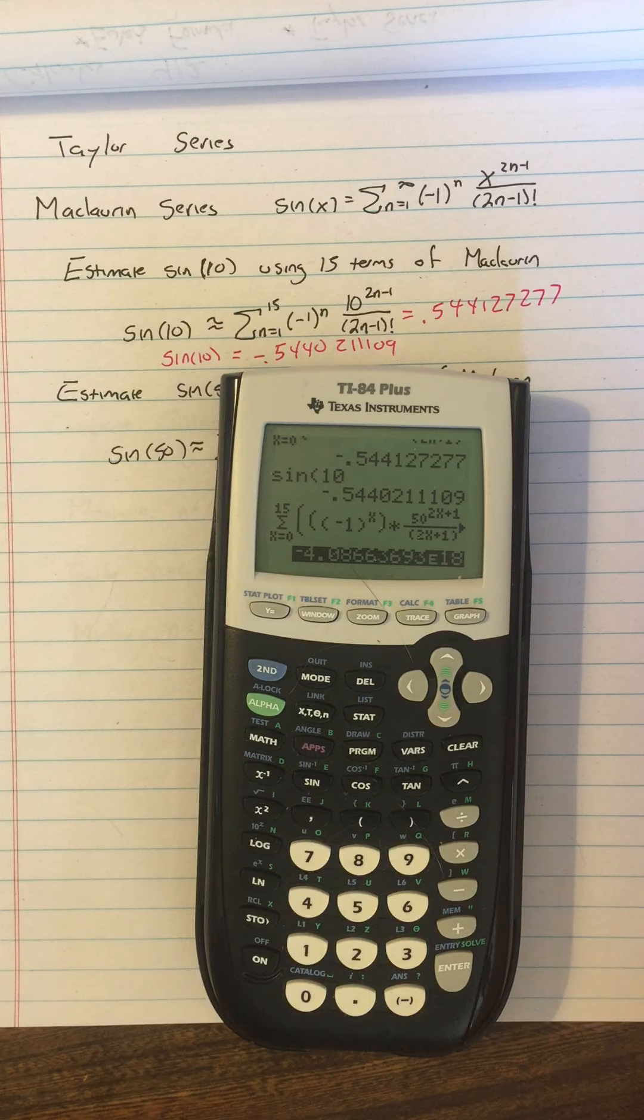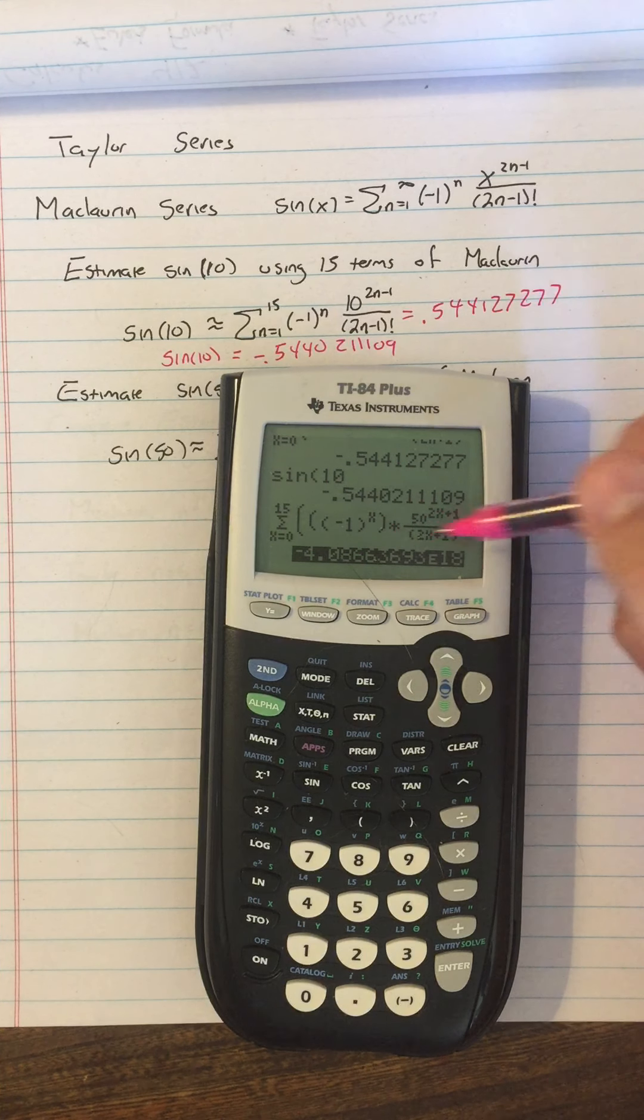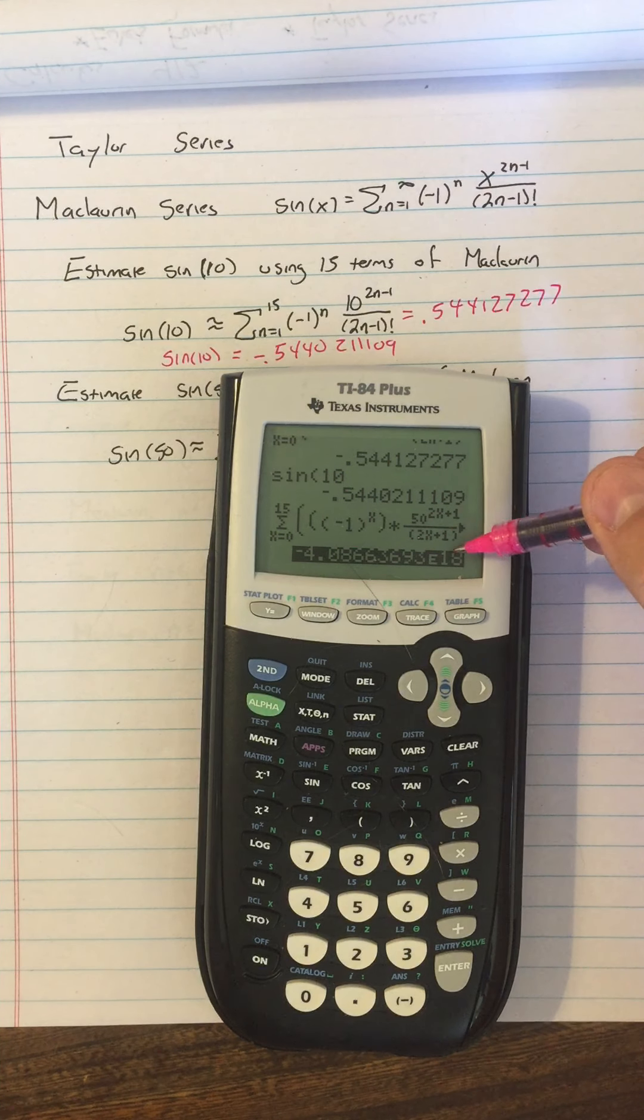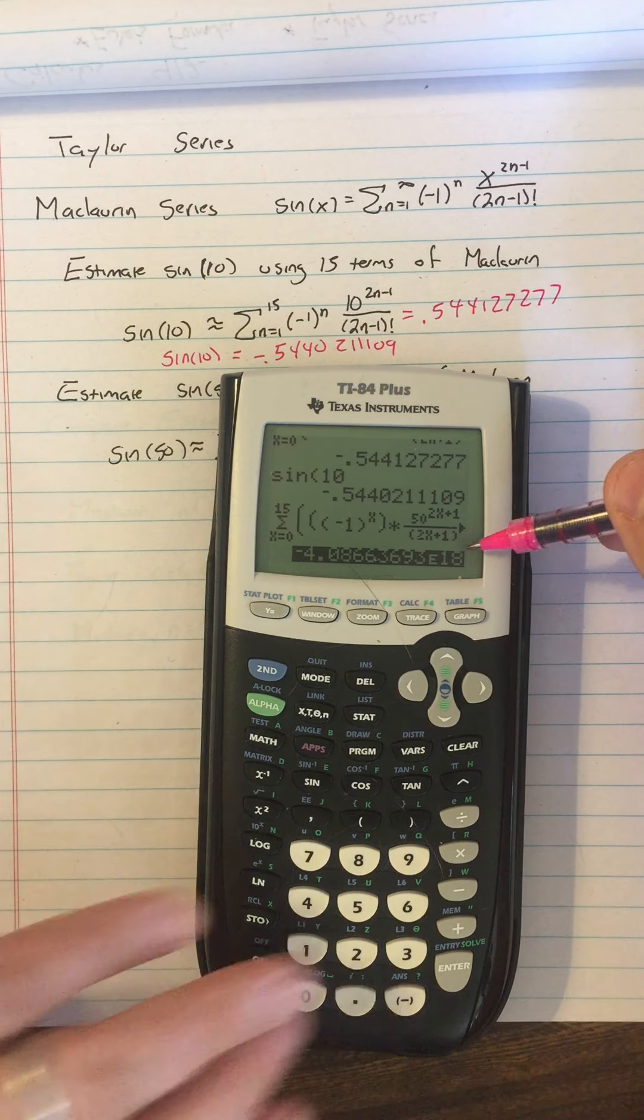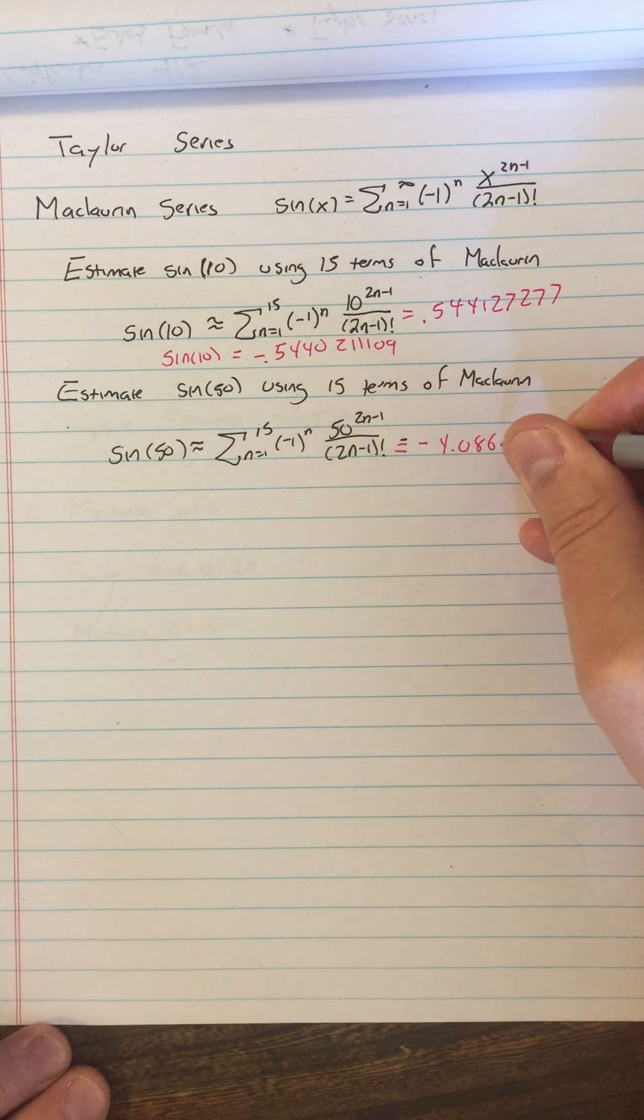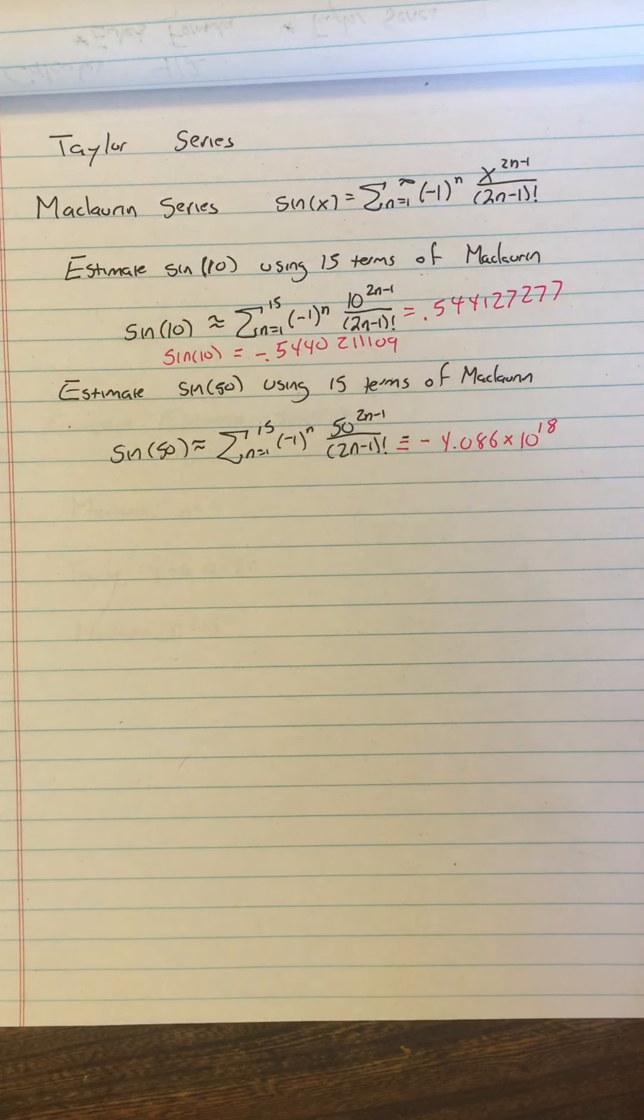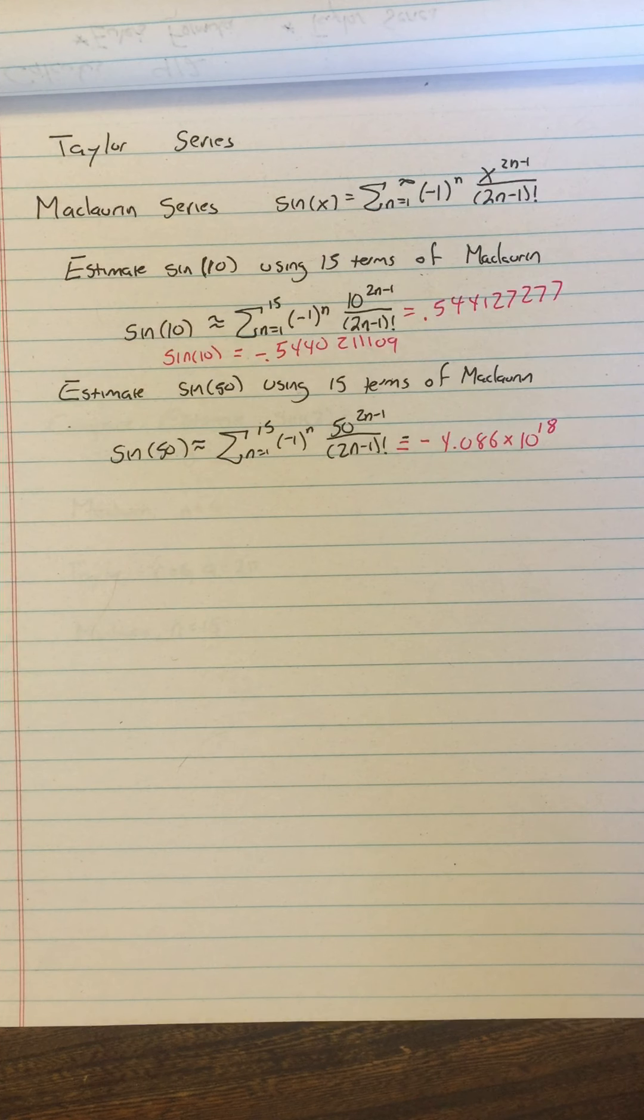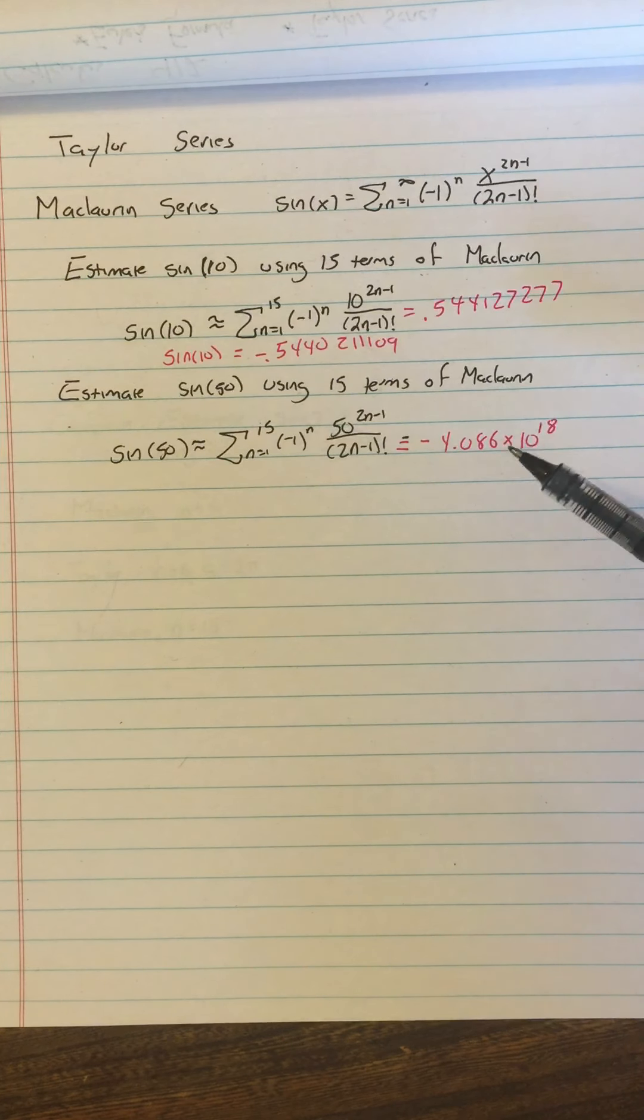I don't know anybody else noticed that. It says negative 4.086, and I said that was wrong because the sine can't be negative 4, but look at this over here, e18, I didn't even notice that. So what we really got here is negative 4.086 times 10 to the 18th power. So it's like way, way wronger than I imagined it to be wrong. It's super, super wrong. So why is this so wrong for sine of 50 when it was so right for sine of 10?